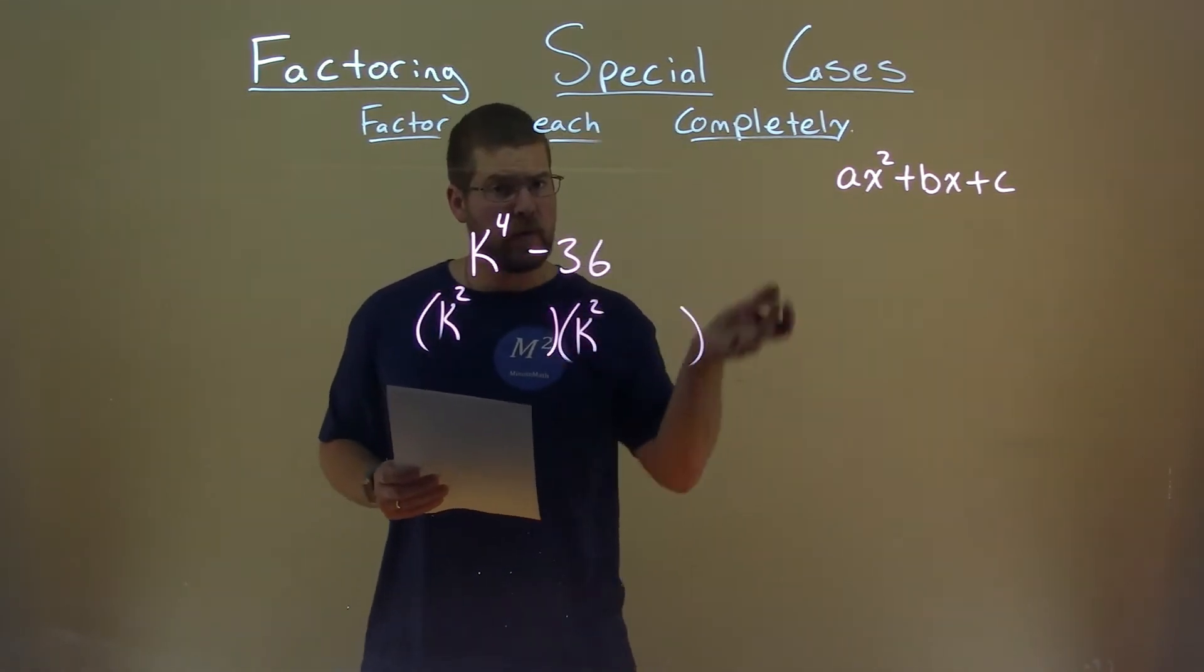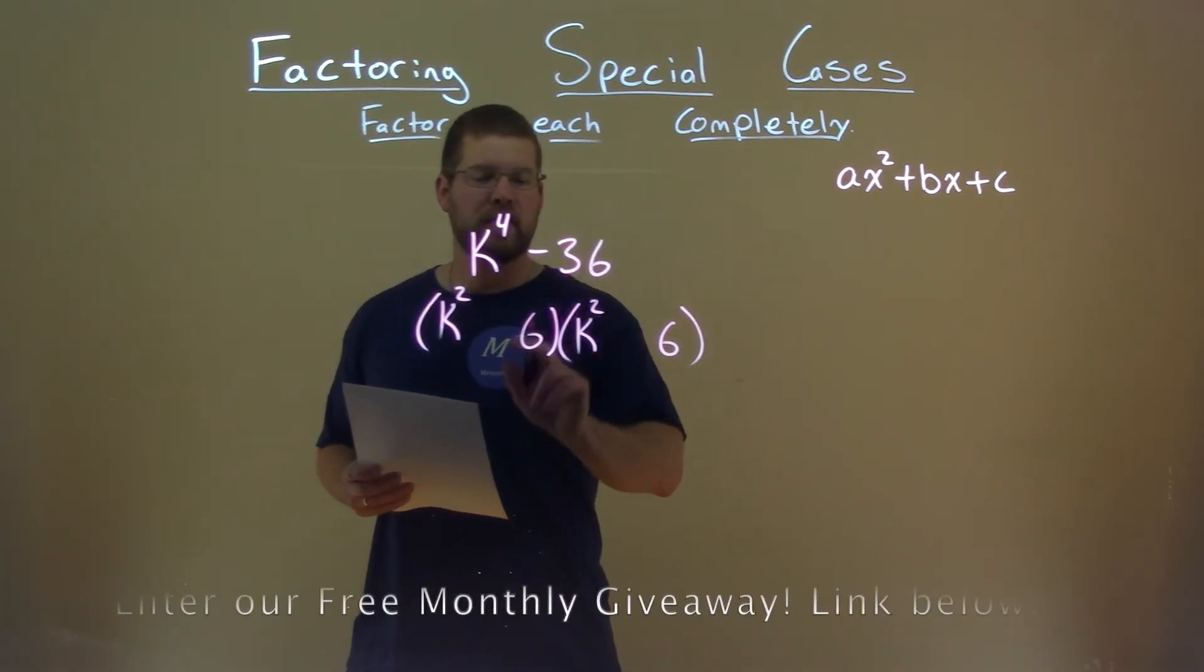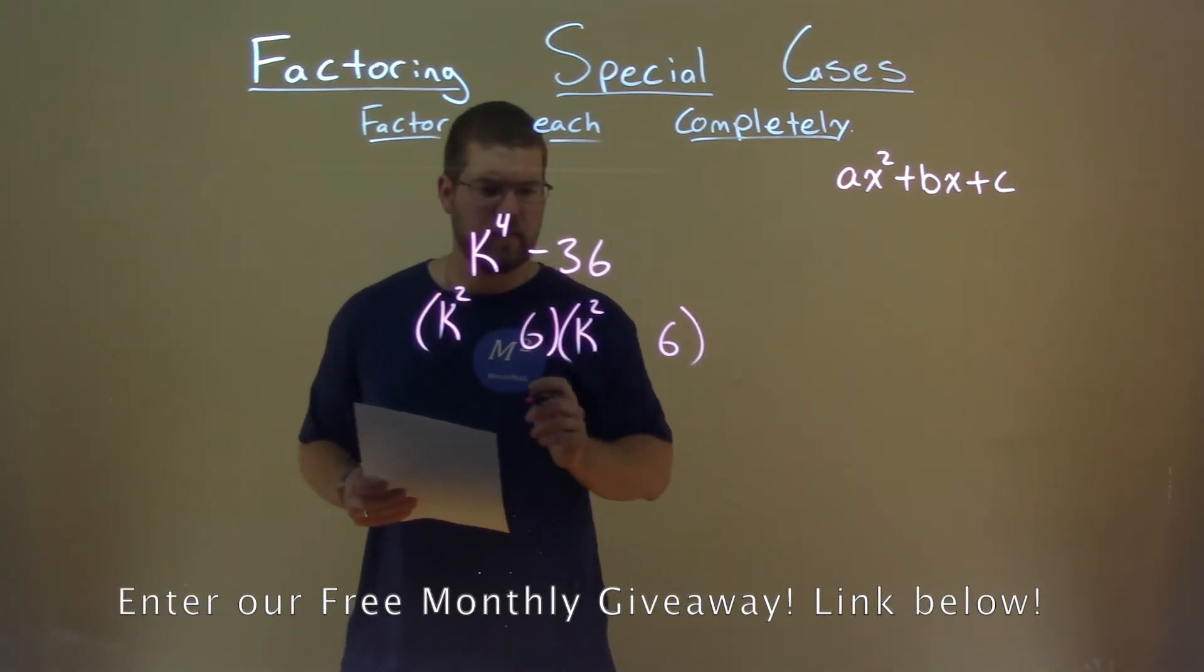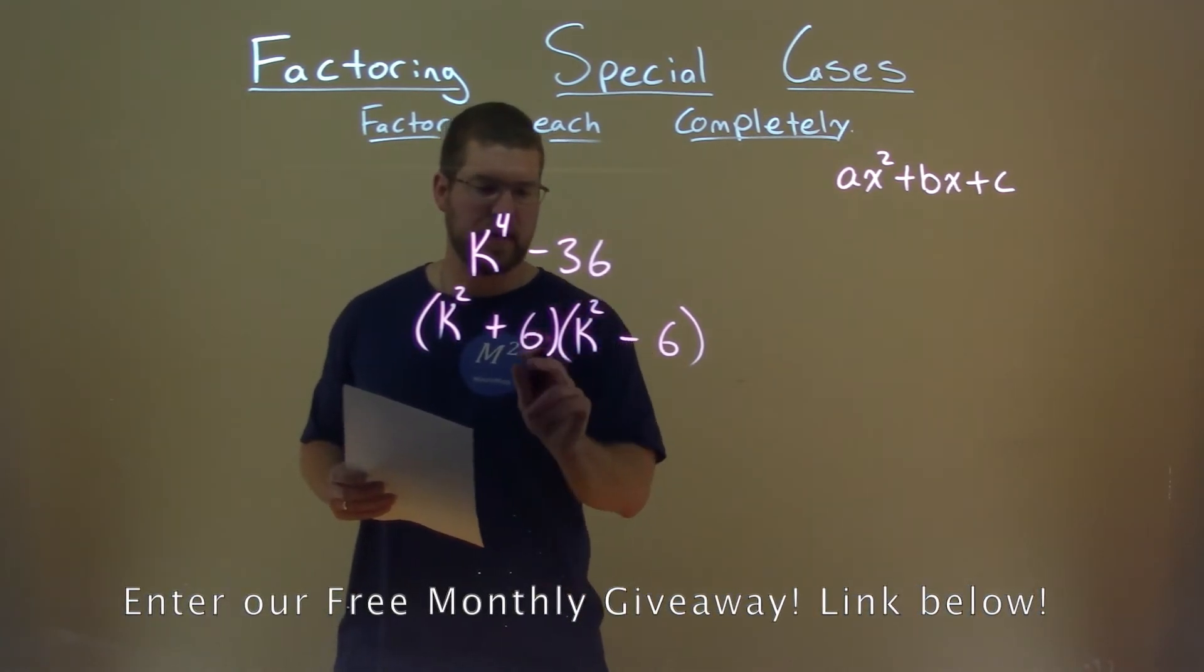Let's look at the 36. Square root of 36 is 6. 6 here, 6 here. 6 times 6 is 36, but this is a negative. So if we make one positive, one negative, we have that part taken care of.